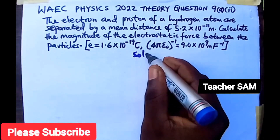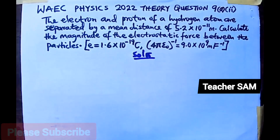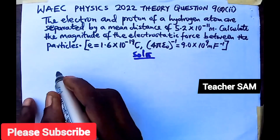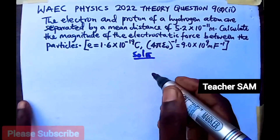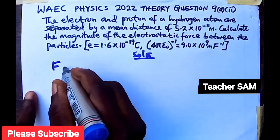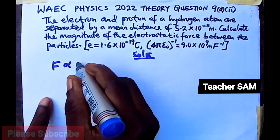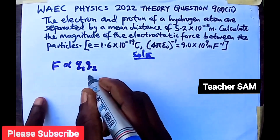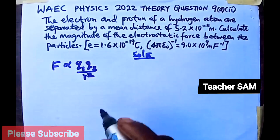Solution. We know that the force of attraction between two charges is directly proportional to the product of the charges — charge 1 times charge 2 — and inversely proportional to the square of the distance between them.